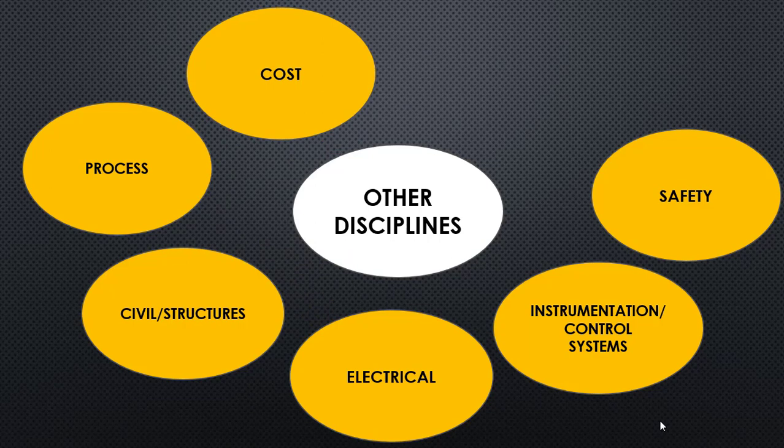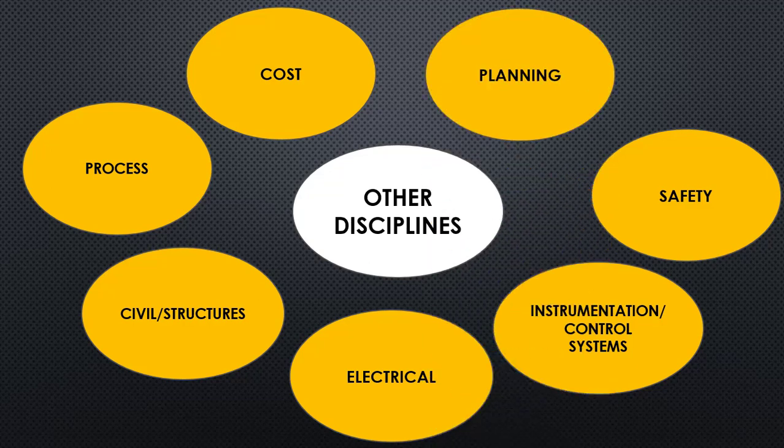The next discipline is cost. A piping design engineer should be aware of the cost implications of the project. The cost or estimation engineer will often ask whether the overall cost of the project can be reduced, so the piping design engineer must understand those requirements and be able to optimize the design to ensure an economical package is delivered. Finally, planning is an important stage. The piping design engineer should know how to plan the entire design phase — how much manpower is required for layout, isometrics, MTO, and other deliverables — so that the planning engineer can develop an overall plan coordinating all disciplines.